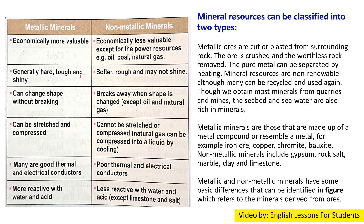Metallic minerals are generally hard, tough, and shiny; non-metallic minerals are softer, rough, and may not shine. Metallic minerals can change shape without breaking, while non-metallic minerals break when shape is changed. Metallic minerals can be scratched and compressed; non-metallic minerals cannot. Metallic minerals are good thermal and electrical conductors, while non-metallic minerals are poor conductors.